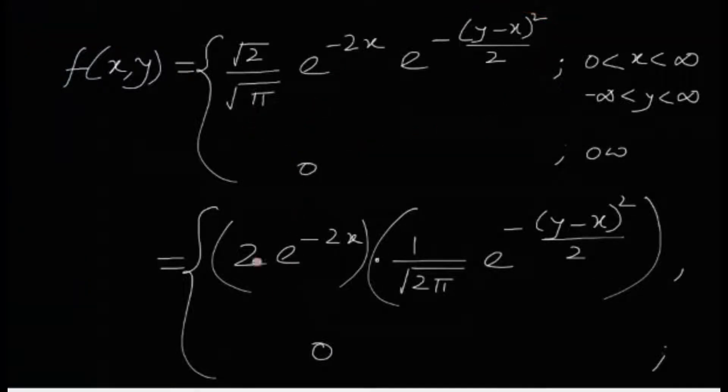So f(x,y) is given like this. Can I not write this as 2 times e to the minus 2x times 1 by root 2 pi times e to the minus (y minus x) squared divided by 2? The same thing, I haven't changed anything, just written in a slightly different form. Here, obviously, root 2 cancels out and the remaining thing is just the same thing. This and this are the same thing but just in a slightly different disguise.